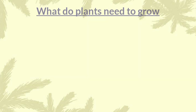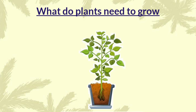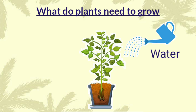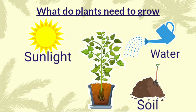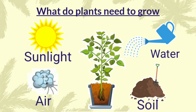Now let us learn what do plants need to grow. Plants need four things to grow. Water — just like us, plants need water to live. They absorb water through the roots, and it travels through the stem and into the leaves. Sunlight — plants need sunlight for energy. Soil — soil provides the roots with nutrients, which then transport to the rest of the plant. Lastly, air — plants also need air to breathe. The plants need all these four sources to grow and stay healthy.